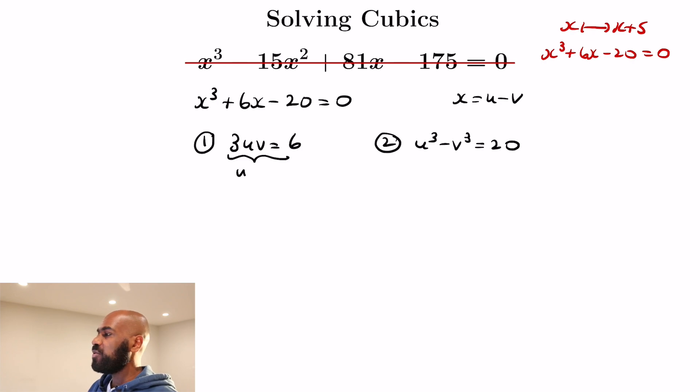So first of all, 3uv is 6, so that means uv is 2. So we're going to use that together with the second equation by actually taking that second equation and squaring it and then substituting this uv equals 2.